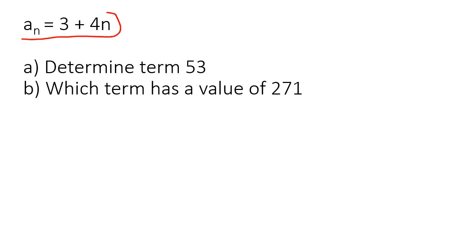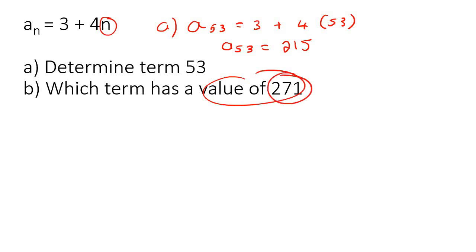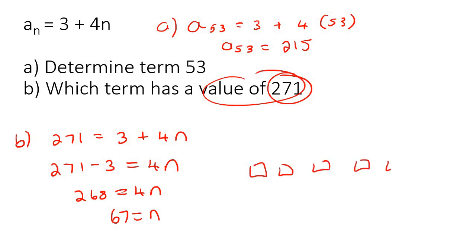For this question, they give us the formula already. So they've already gone and done everything. So now they just say, determine term 53. So you need to know, do we put the 53 there or do we put the 53 there? Well, they're telling us that it's term 53. So it's position 53. So that would go here. So you're going to go plug it like that. And so term 53 would be 215. Now it says, that's for question A. Now for question B, which term has a value? So now they're giving us the value. So that goes here. So for question B, you're going to say 271 is equal to 3 plus 4n. And then you can take the 3 to the left. And then you end up with 268 is equal to 4n. Divide both sides by 4. And that's 67. So that means that if you had to look at this pattern, and if you had to go all the way to term number 67, the value that you would find there would be 271.